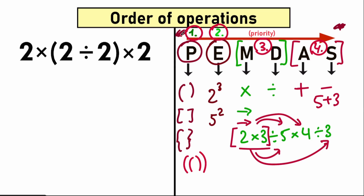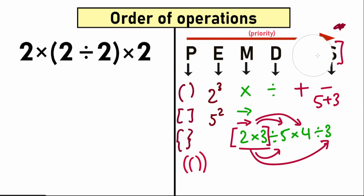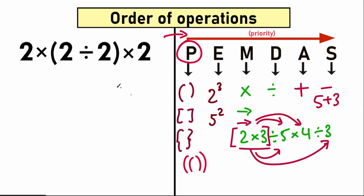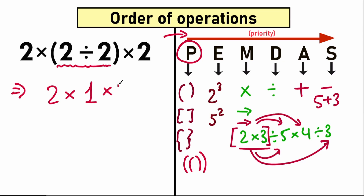Now let's apply this order of operations to our question. According to order of operations, we scan in strict order from left to right. The first step is parentheses — let's find where we have parentheses. We have parentheses right here. Our first step is to evaluate the expression inside parentheses. Inside we have 2 divided by 2, which everyone knows equals 1. So after step one, we have 2 times 1 times 2, and we've completed the first step.